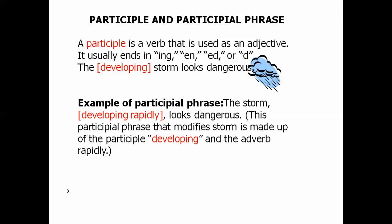A participle is a verb that is used as an adjective. It usually ends in ing, en, ed, or d. For instance, the developing storm looks dangerous. See, it ends in ing. And it's telling you what kind of storm. So developing is an adjective. But it's not an ordinary adjective because it's made from a verb.